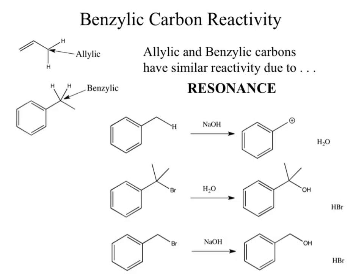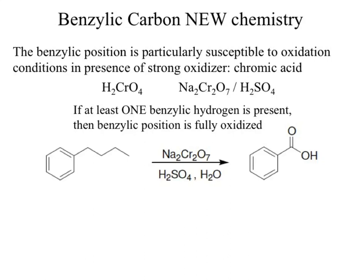Benzylic positions are very reactive. The new chemistry at the benzylic position — it happens to be particularly susceptible to oxidation. Meaning, if I have a really strong oxidizer like chromic acid — you can see it as either H2CrO4, or you may see it as the dichromate and sulfuric acid. Both of those are the equivalent things.